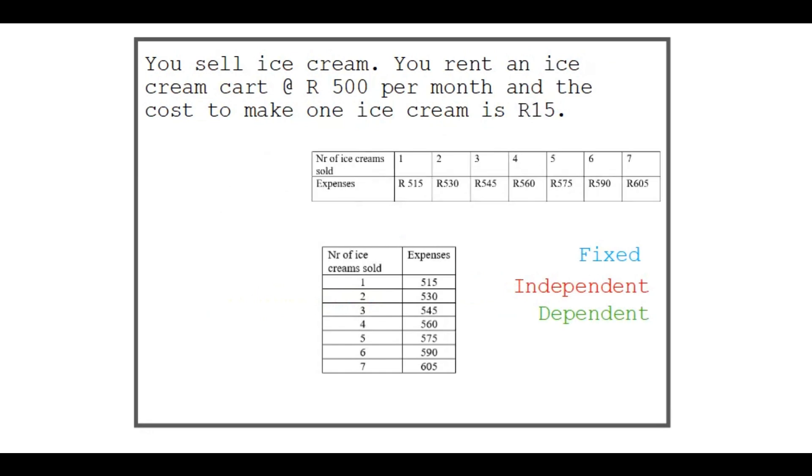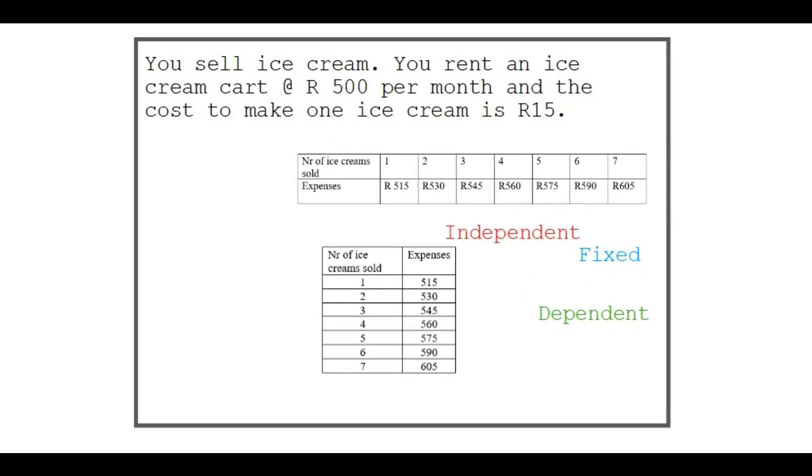Let's look at the table given here. This first table, we need to decide what's going on there. We see that we have the number of ice cream sold, and the expenses start with 500, and then there's 15 Rand because it's only one sold, 530 because two sold, 545, three sold.